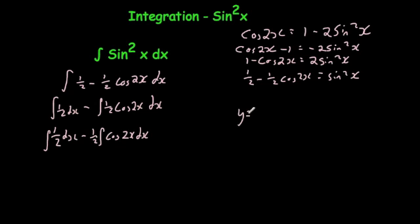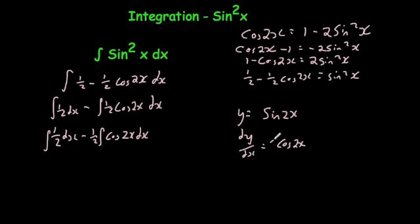We let y equal what you would differentiate to get cos 2x — you'd start with something involving sine 2x. Differentiating gives dy/dx equals cos 2x times the differential of 2x, which is 2. So if you integrate 2 cos 2x you get sine 2x. We don't want a 2 in front, so divide both sides by 2: integrating cos 2x gives one half sine 2x. That's one over the differential of the inside, times sine 2x.